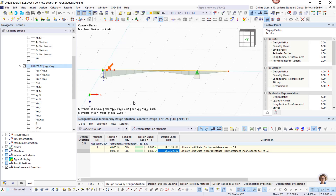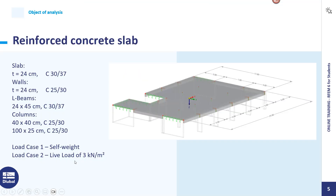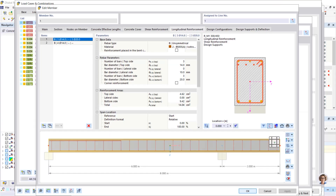Going back to the slide for a short overview: the slab we will work with is a reinforced concrete slab, 24 cm thick, using C30/37, supported by walls and columns. We also have L-beams in the model. Loads include self-weight and live load. Let's open the model.